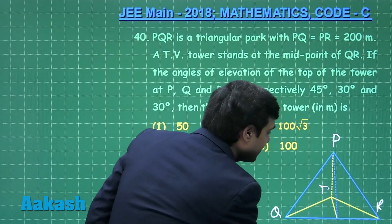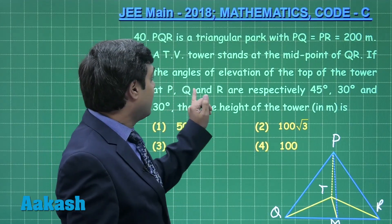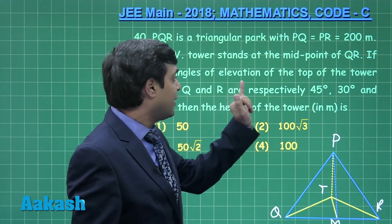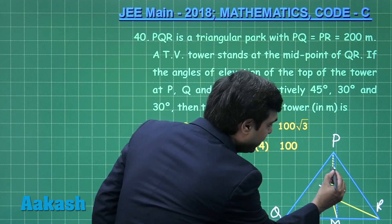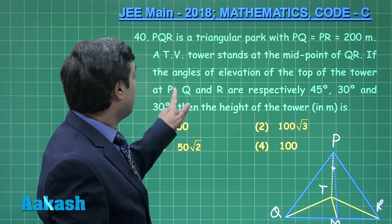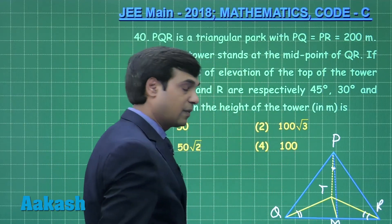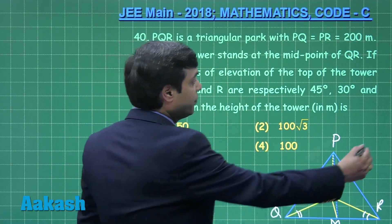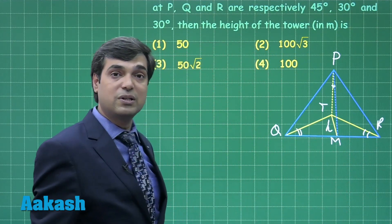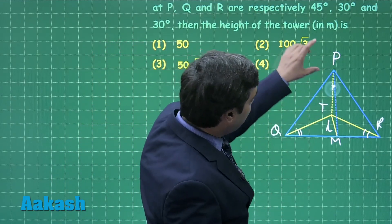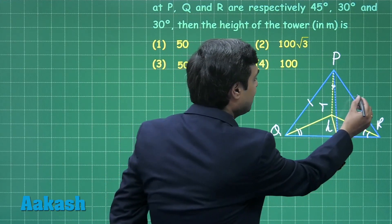Let us consider the triangular park PQR with the TV tower at midpoint M of QR. The tower TM makes an angle of elevation of 45 degrees from P, 30 degrees from Q, and 30 degrees from R. Let the height TM equal h. Since the angle from P is 45 degrees, PM equals TM equals h. Also PQ equals PR equals 200.